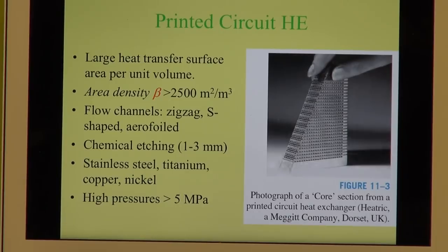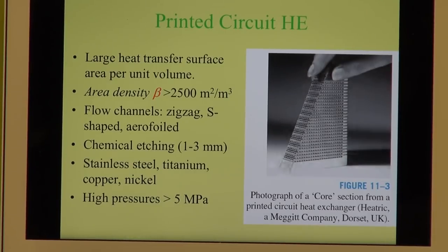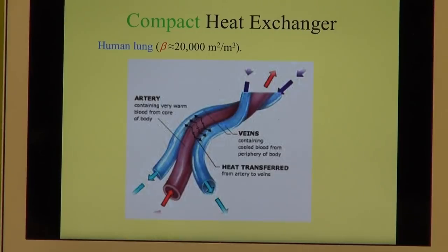When looking at compact heat exchangers, you can go to higher and higher area density values. The heat exchanger with the highest area density is one that every one of you has — the lungs. The human lungs are by far the most effective type of heat exchanger.